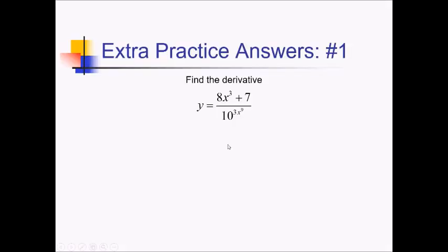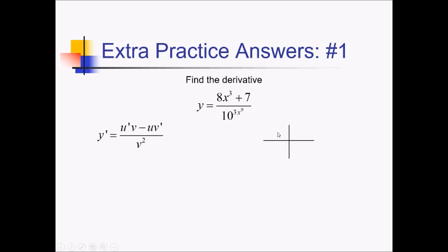For this one, we need to use the quotient rule. There's no way to really simplify this otherwise. So that's u'v minus uv' over v squared. I'll use the box and ribbon to help me organize things. So my numerator is going to be 8x cubed plus 7, and in the denominator I've got 10 to the 3x to the 9th.